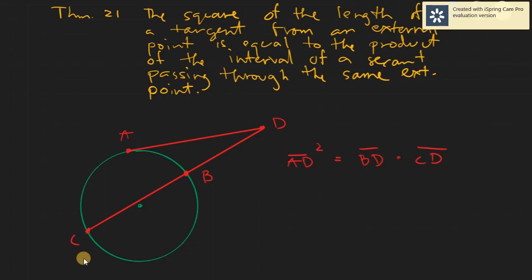Today we will be discussing the last theorem that we will be having in our course, being theorem number 21: the square of the length of a tangent from an external point is equal to the product of the interval of a secant passing through the same exterior point.